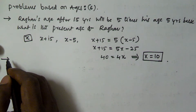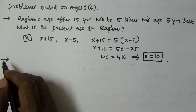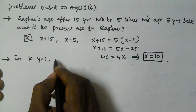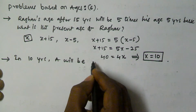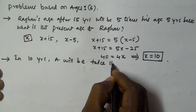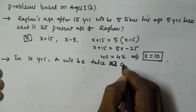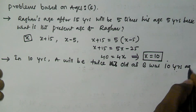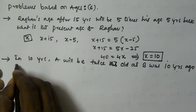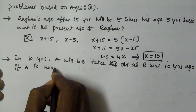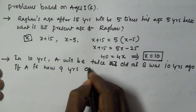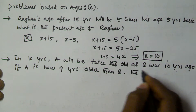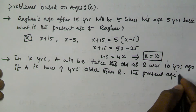So let's see another problem based on ages. In 10 years, A will be twice as old as B was 10 years ago. If A is now 9 years older than B, what is the present age of B?